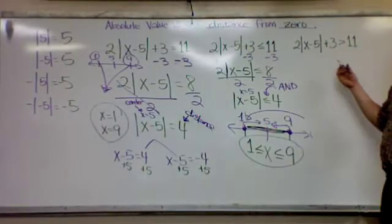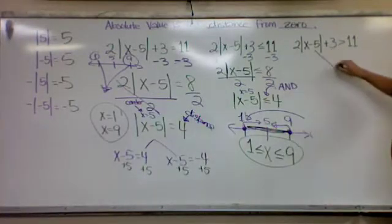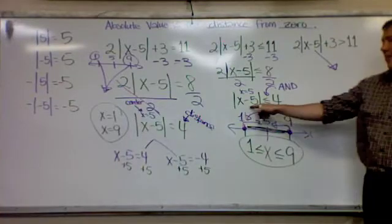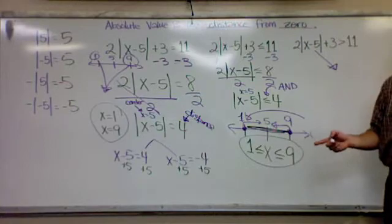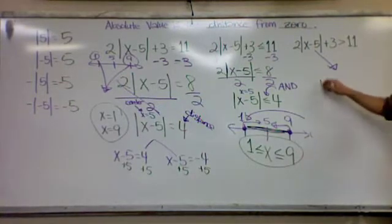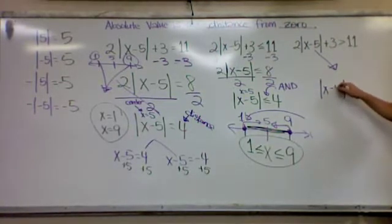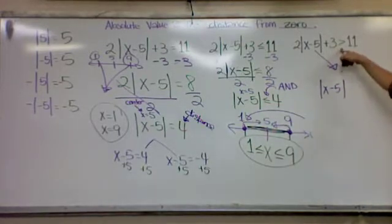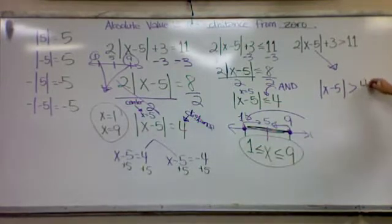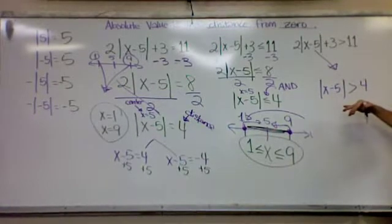Let's do this one. So I'm going to just go ahead and skip to this step, because it should all be the same, right? So it should say the absolute value of x minus 5, but what am I going to say now? Greater than 4. All the other steps would be the same.